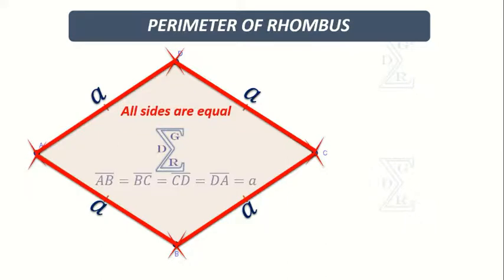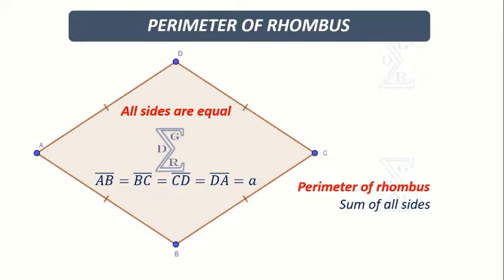Let us take each side is A. Here, A is a variable. As we know, perimeter means the sum of all sides. That is, the line segment AB plus BC plus CD plus DA.